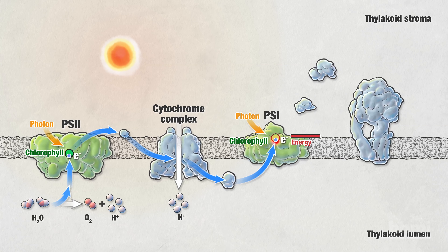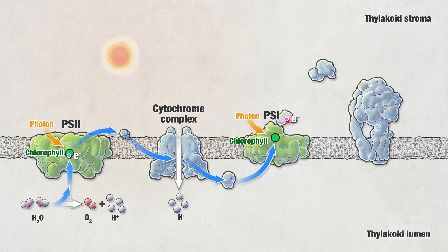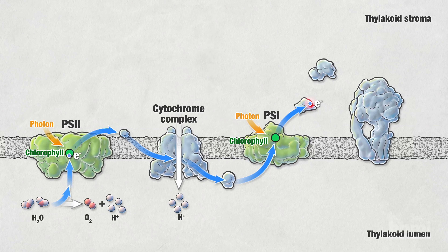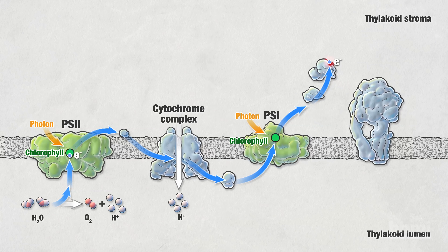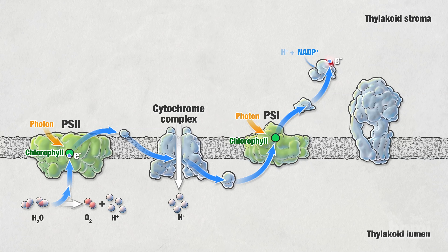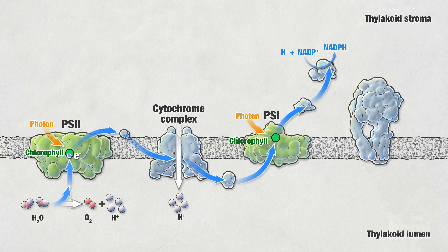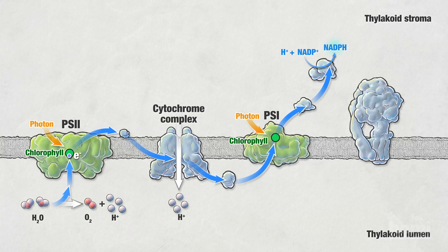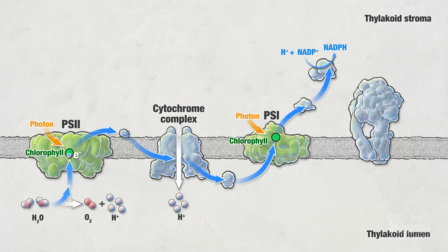The other products are protons, or hydrogen ions, which are released into the inside of the thylakoid, or lumen. The excited electrons move to the cytochrome complex. Some of the energy from the electrons is used by the cytochrome complex to transport additional protons into the lumen. The second electron carrier, a protein inside the lumen, receives the electrons and passes them to photosystem I.